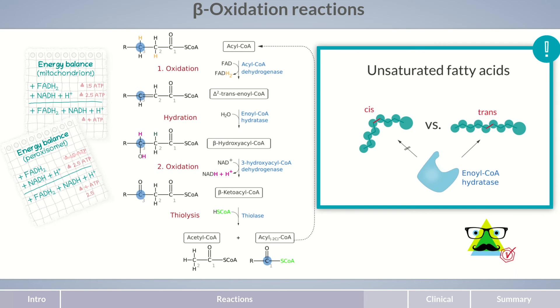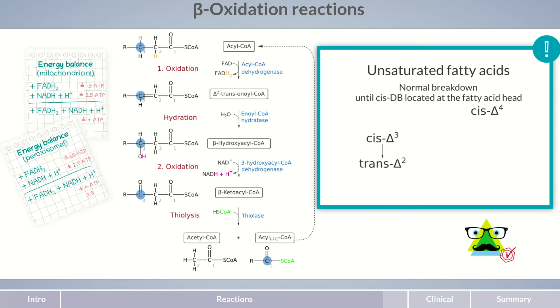Don't worry, we won't go into too much detail as the degradation of unsaturated fatty acids is rather complex. At this point, it's sufficient to note that unsaturated fatty acids with a cis double bond are broken down in the same way as saturated fatty acids until the cis double bond is in the delta-3 or delta-4 position. A cis bond in the delta-3 position can be transformed into a trans-bond in the delta-2 position, which is then metabolized in regular beta-oxidation.